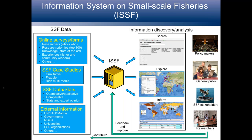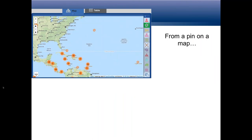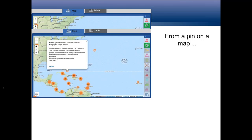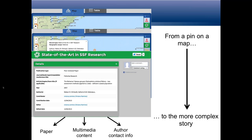We tried to have a nice balance in the system between simplicity and richness of information. Small-scale fisheries are very rich and diverse, but we don't want to overwhelm users. The system works a bit like Google Maps — you see pins on the map, click one to get a bit more detail, and then go deeper still. You have different levels of detail you can access to unravel a more complex story about the fishery.